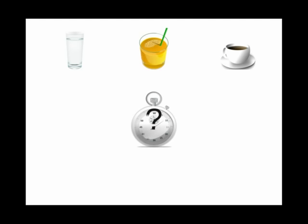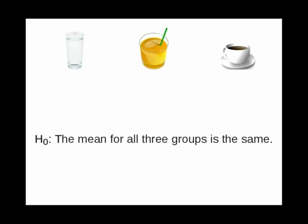Now you test everyone's reaction time. And you want to know if there's any difference in reaction time between the groups. The null hypothesis says that the mean reaction time for all three groups is the same.